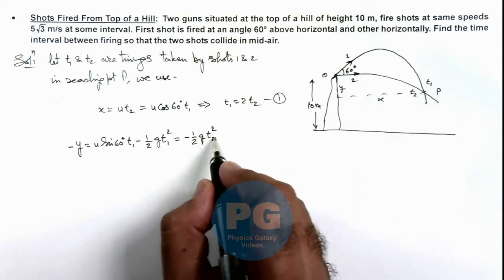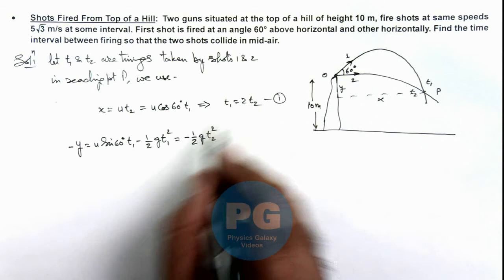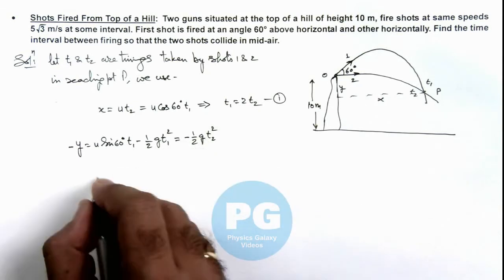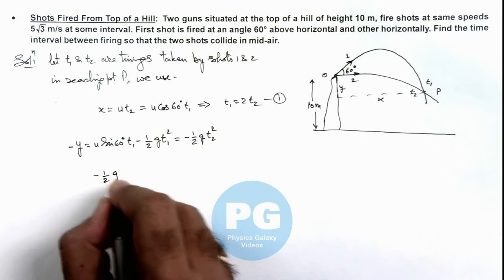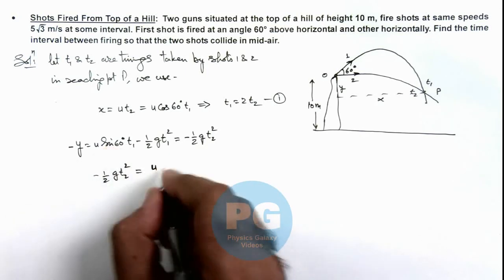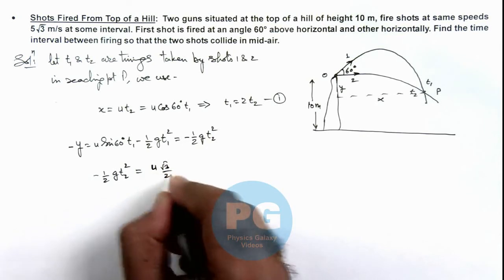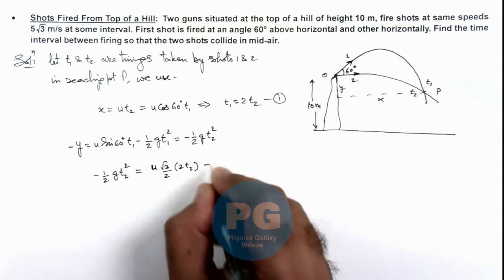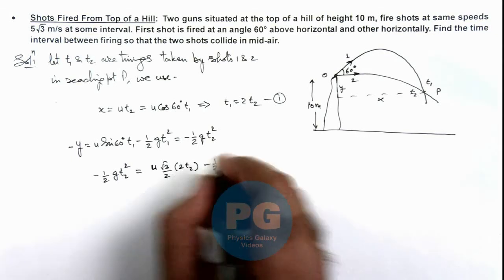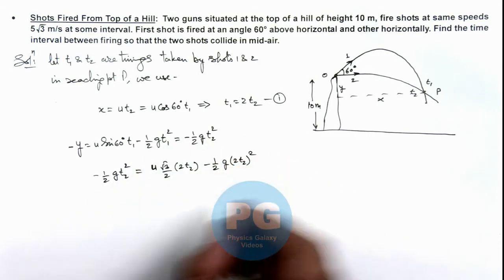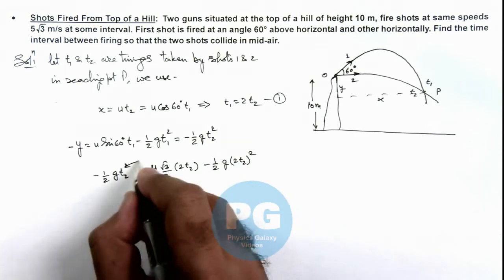Here to calculate the value of t2, if we substitute t1 is equal to 2 t2 over here see what we are getting. This is minus half g t2 square is equal to u, and sine 60 is root 3 by 2, and t1 we can substitute as 2 t2, minus half g multiplied by 2 t2 square. Further, if we simplify this here you can see 1 t2 gets cancelled out.